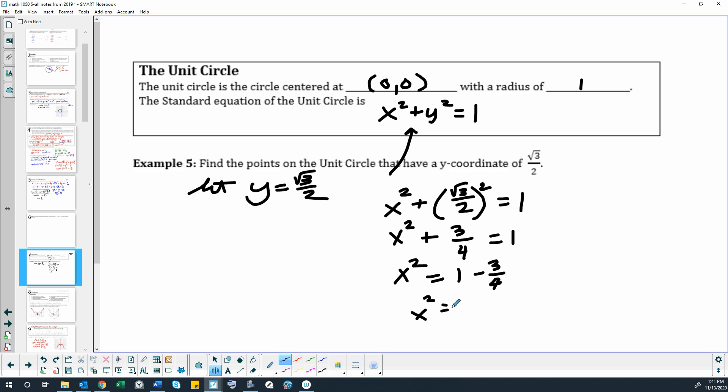So x squared equals 1 fourth. That means x equals plus or minus 1 half.